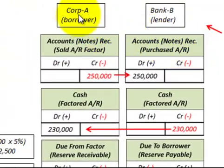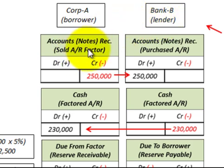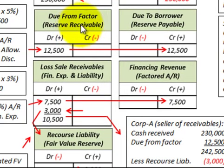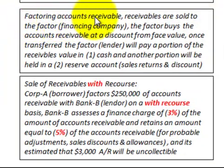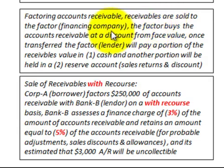In our example, Corporation A is the seller or borrower, and Bank B is the lender or buyer. Corporation A is going to sell accounts receivable to Bank B, and Bank B will give Corporation A cash for those receivables at a discounted amount, based on sales allowances, discounts, and uncollectible accounts. This is a factoring arrangement where receivables are sold to the factor at a discount from face value.